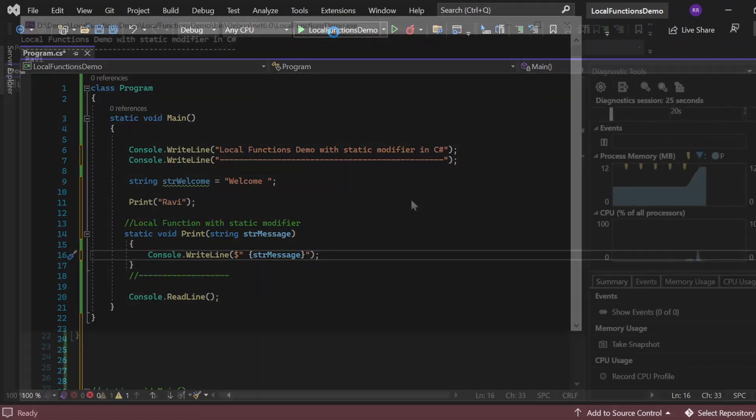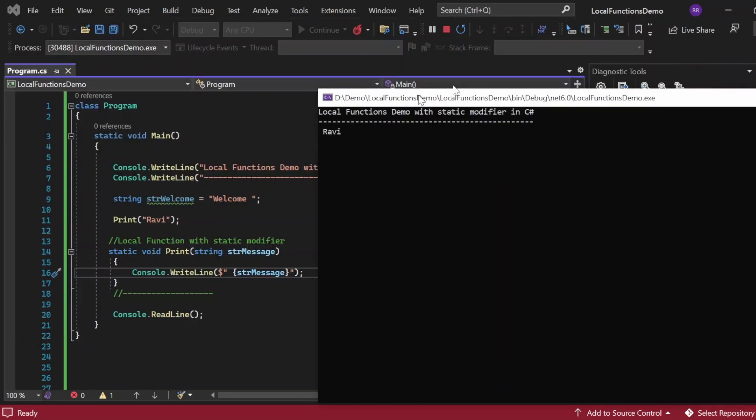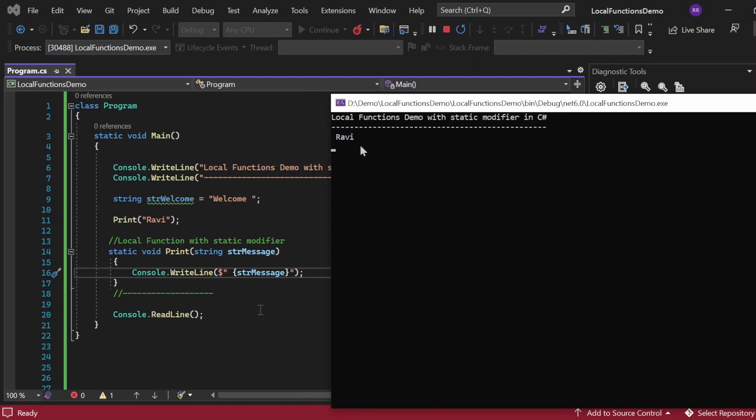Now let me try to execute and see the output. The output appears in the console window: local function demo with the static modifier C# and Ravi, which we are receiving as a parameter. That's what we're printing.